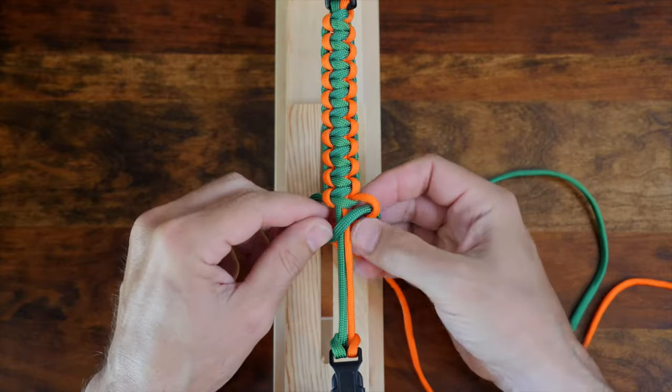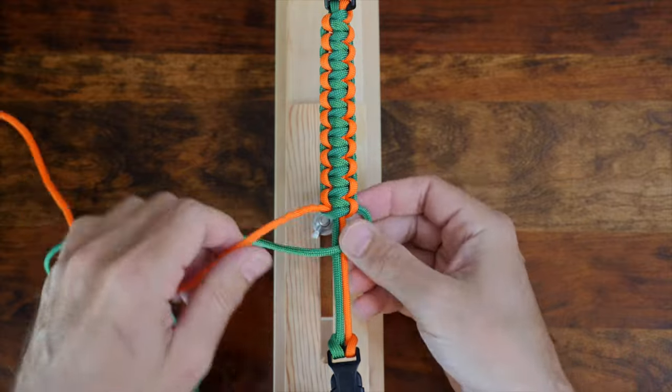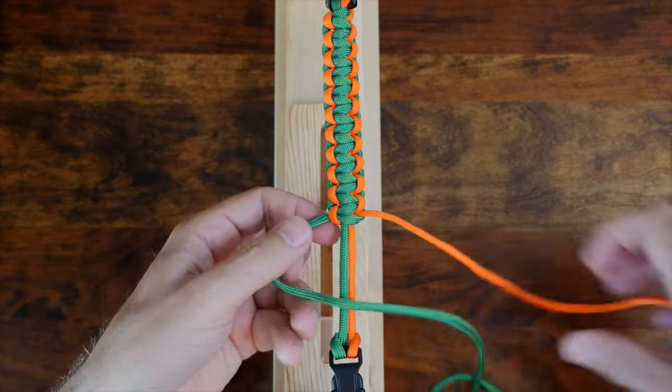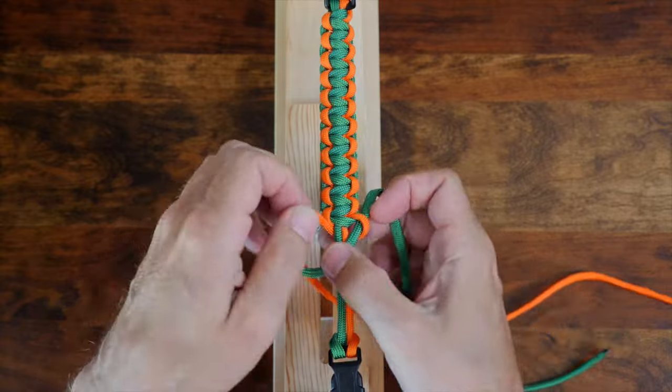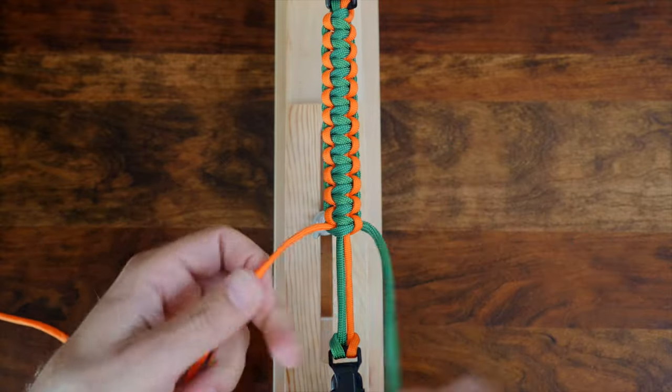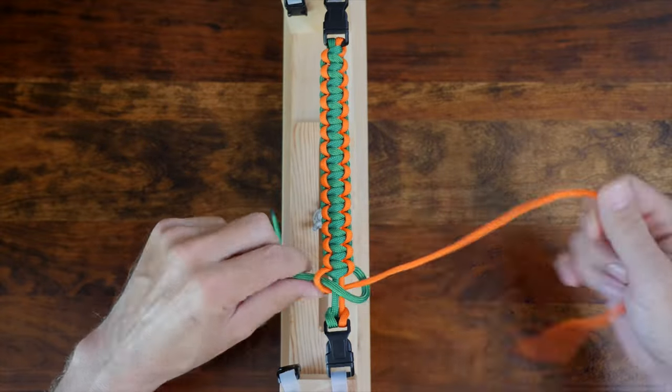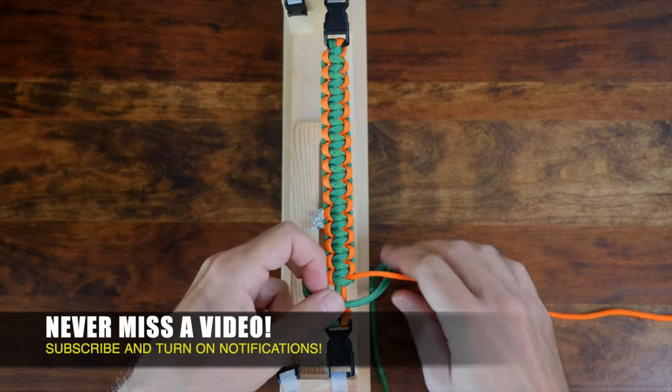As you tie your paracord bracelet, be sure to pull each pass of paracord nice and snug. You don't want it to be too tight, or the bracelet will be very stiff, but cinch up each weave equally tight, and try not to leave too much gap in the weave. As we're near the end, the bracelet is really starting to take shape. We're close to finishing it off.